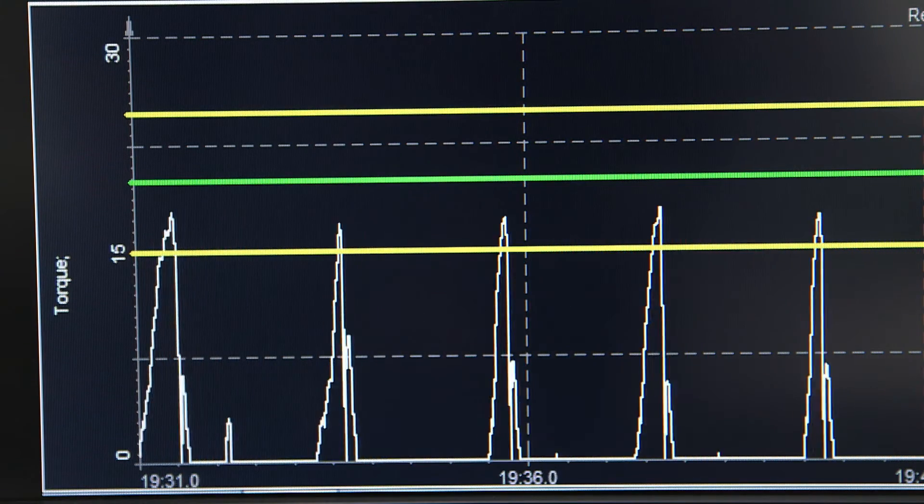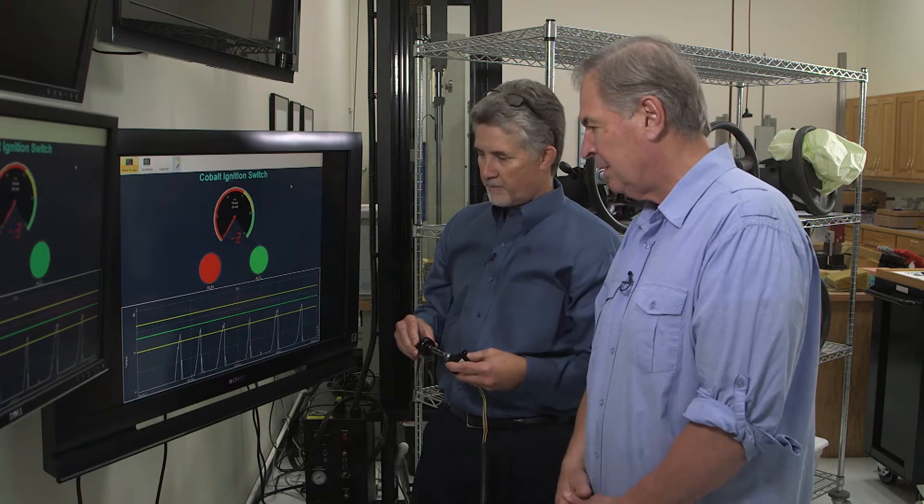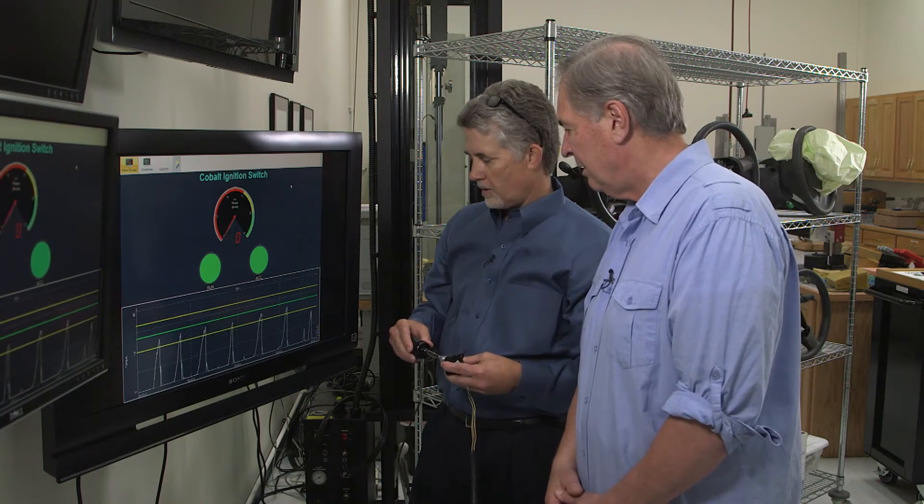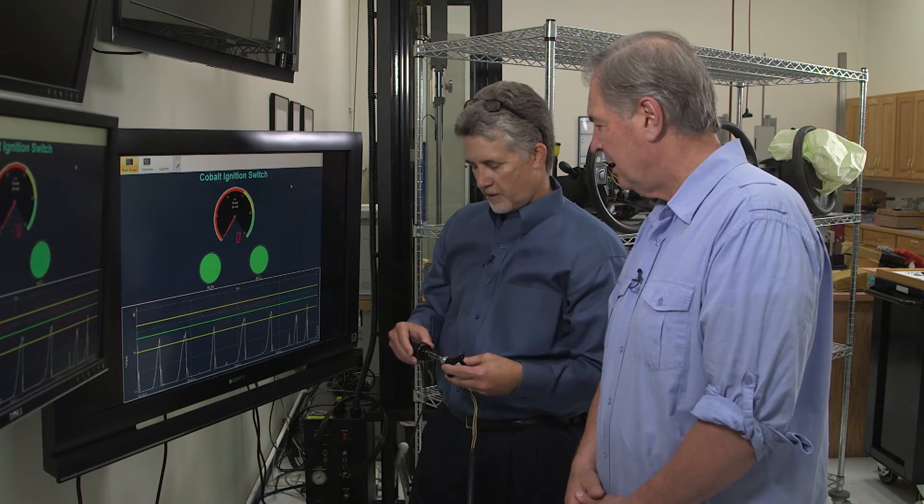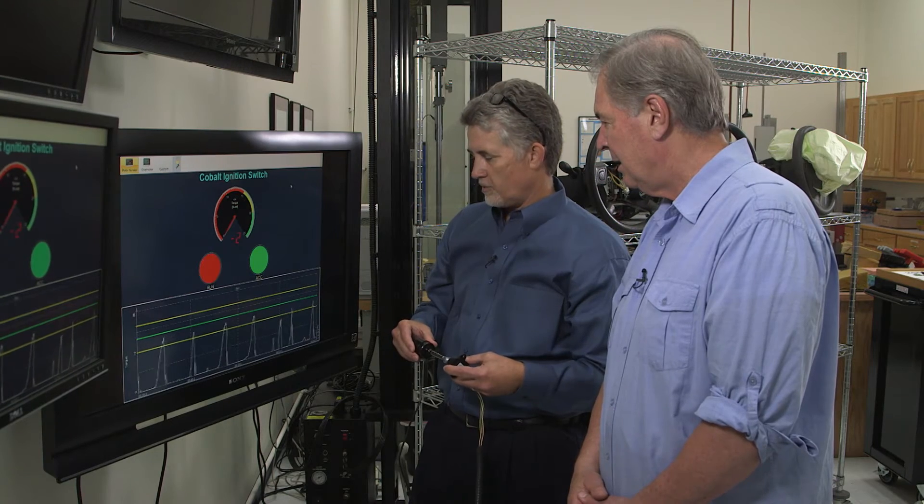And higher than the yellow, which indicates the minimum it should be. And basically, it's approaching the torque specification for the switch, which is the green at 20 newton centimeters.